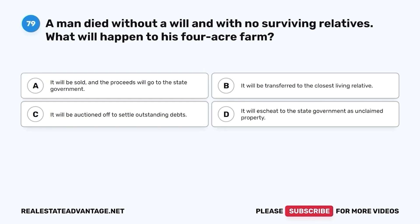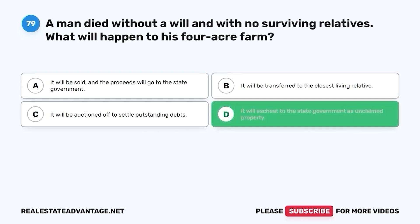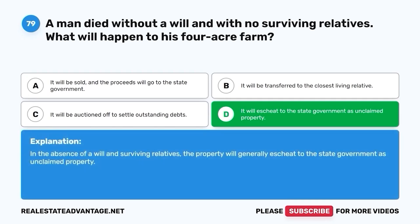Question 79. A man died without a will and with no surviving relatives. What will happen to his four-acre farm? A. It will be sold and the proceeds will go to the state government. B. It will be transferred to the closest living relative. C. It will be auctioned off to settle outstanding debts. D. It will escheat to the state government as unclaimed property. The correct answer is D. It will escheat to the state government as unclaimed property. In the absence of a will and surviving relatives, the property will generally escheat to the state government as unclaimed property.